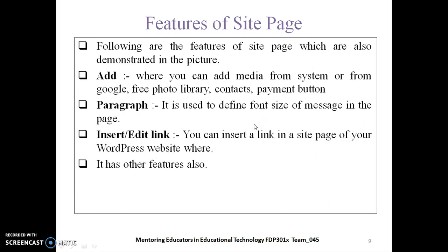Now let us see the various features of the site page. By clicking on Add, you can add media from your system, from Google, or from a free photo library. You can also add contacts or payment buttons to your web page. There is also an option called Paragraph, used to define font size, title, and heading in the description page. Additionally, there is an Insert or Edit Link option, where you can insert a link in your site page to navigate to a particular URL, and you can add media, video lectures, or assignments for your students.